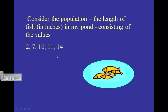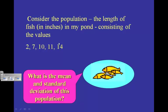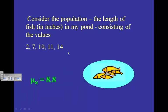Consider the population — the length of fish in inches in my pond — consisting of the values 2, 7, 10, 11, and 14 inches. I have 5 fish in my pond, and these are the lengths of all 5, so that's the entire population. We could easily calculate the mean and the standard deviation by adding them all up and dividing by 5. The mean of our population is 8.8, and the standard deviation of our population is 4.0694.